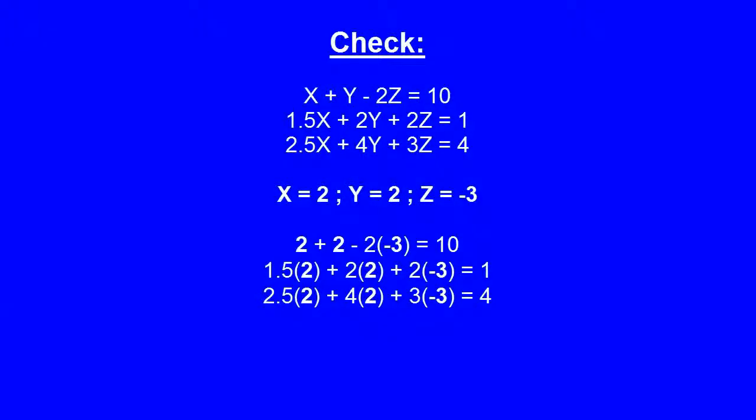Check the answers provided by the calculator by plugging them back into the system of equations. 2 plus 2 minus 2 times negative 3 equals 10. The answers given work for the other two equations as well.